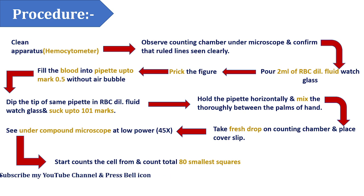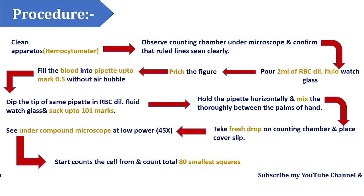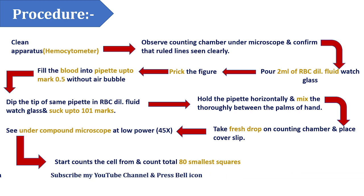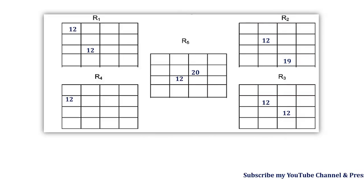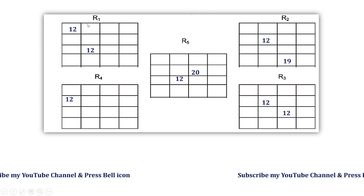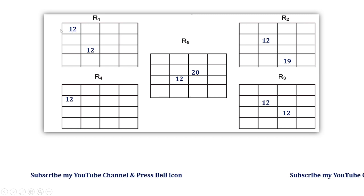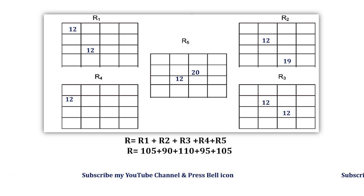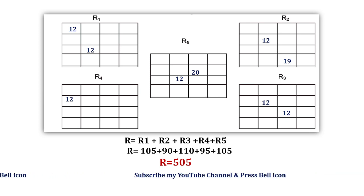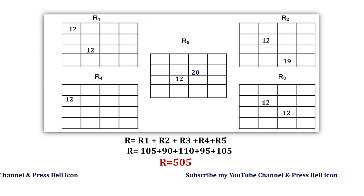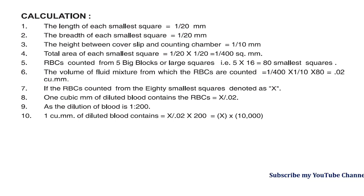For RBC counting, you count cells in 80 small square boxes — note this difference from the WBC experiment, where you count 64 small square boxes. This is an important exam point. In the observation table, record the cell counts from each of the five regions (R1 to R5). Take the total of all five counts — for example, a total of 505 — and place this value into the formula.